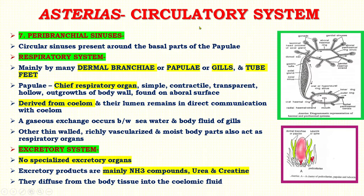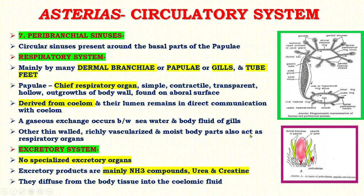Now, the respiratory system: respiration takes place mainly through dermal branchiae, also known as papuli or gills, and tube feet. Papuli are the chief respiratory organs in Asterias. These are simple, contractile, transparent, hollow outgrowths of the body wall found on the aboral surface. They are derived from the coelom and their lumen remains in direct communication with the coelom. Gaseous exchange — that is, between oxygen and carbon dioxide — occurs between sea water and the body fluid of the gill. Other richly vascularized and moist body parts also act as respiratory organs.